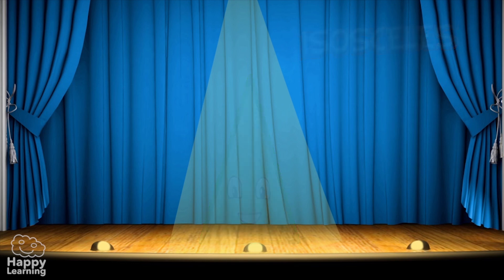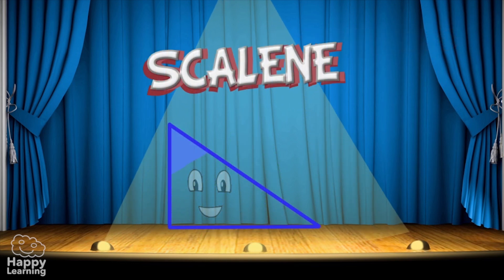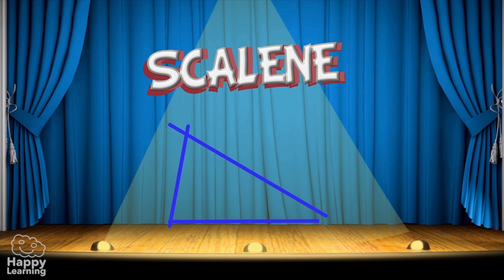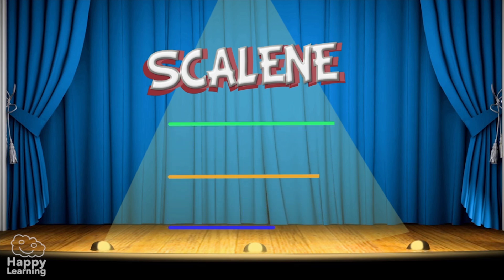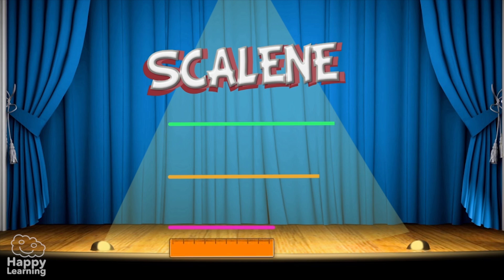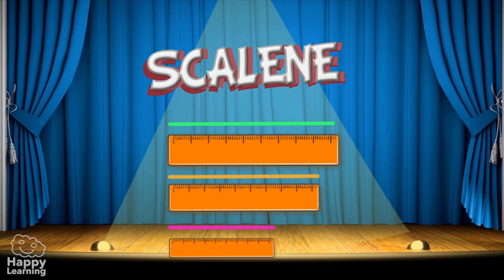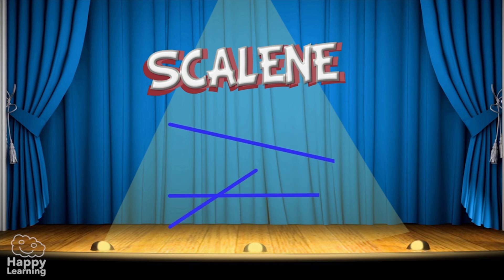And finally let's look at a scalene triangle. All three sides are different lengths. Easy, eh? A scalene triangle is the one with three different length sides. None of its sides are equal.